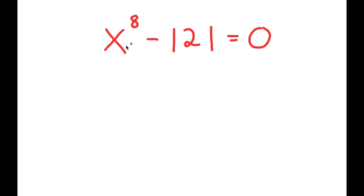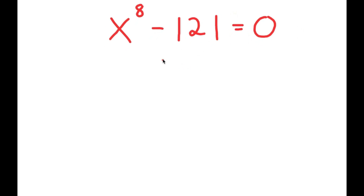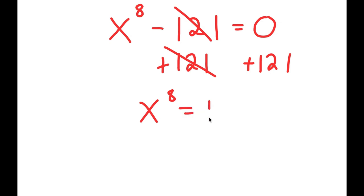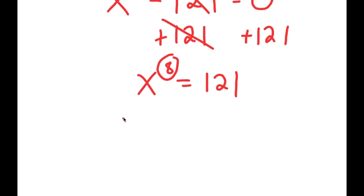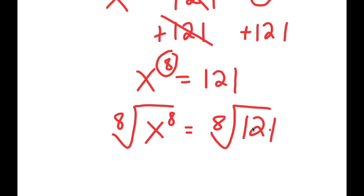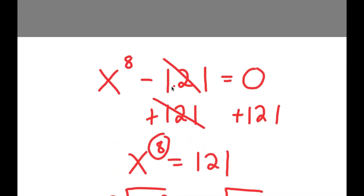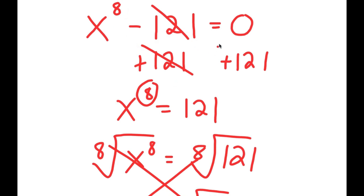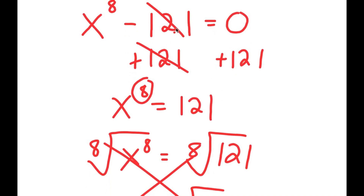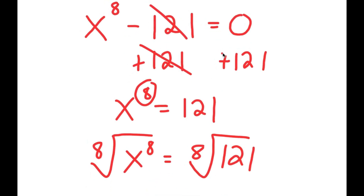In this video, I'm going to be teaching you how to solve this exponential equation. We have x to the power of 8 minus 121 is equal to 0. What most people would think to do is add 121 on both sides to get x to the power of 8 equals 121, then take the 8th root to get the 8th root of 121. But this method is actually wrong, because there are many more solutions than just two. So we want to find all of the solutions to this equation.